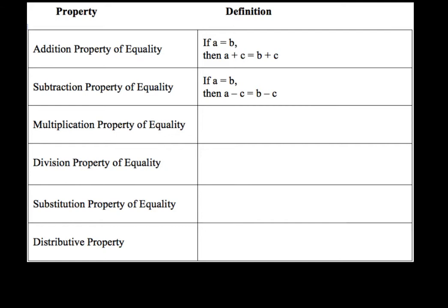Next, we've got the multiplication property of equality. For this one, if you have A equal B, then you can multiply each side by the same number. In this case, AC equals BC. So if we start out A equals B, then we can also multiply both sides by the same number, and we would end up with AC equals BC.